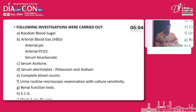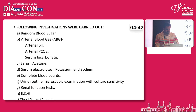The following investigations were carried out: random blood sugar, arterial blood gas analysis including arterial pH, arterial pCO2, and serum bicarbonate, serum acetone, serum electrolytes specifically potassium and sodium, complete blood counts, urine routine microscopy with culture sensitivity, renal function test, ECG, chest X-ray PA view, and HbA1c level.